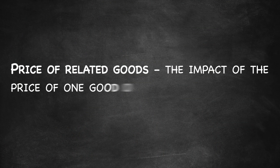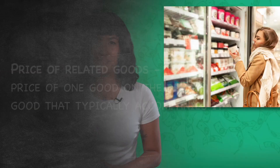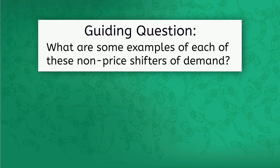The price of related goods refers to the impact of the price of one good on the demand for a good that typically accompanies it — like pancakes and syrup, or peanut butter and jelly. Think about walking into the grocery store and seeing ice cream on sale, so you decide to buy some. Well, you might also buy cones to go with the ice cream, even though you weren't planning on it when you left your house. Take a few minutes to think of some examples of each of these non-price shifters of demand to complete your graphic organizer.